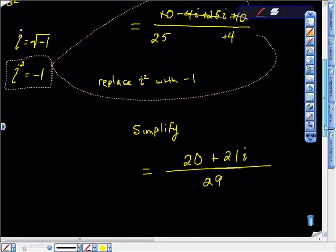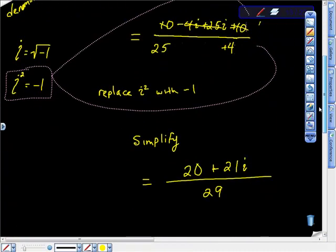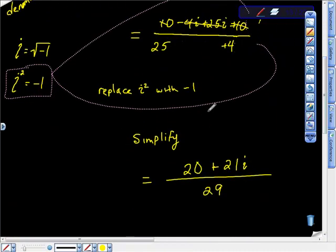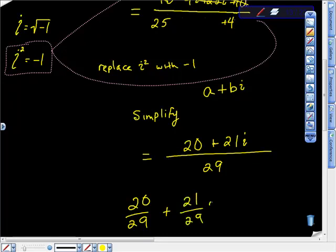And then remember, let's take a look really quick. Remember we have to put it in this standard form a plus bi, so we have to get back to this. So we have to get this to a plus bi form. So to do that, all we're going to do is this. We have 20 over 29, so 20 over 29 plus 21 over 29 i. And there's our answer.